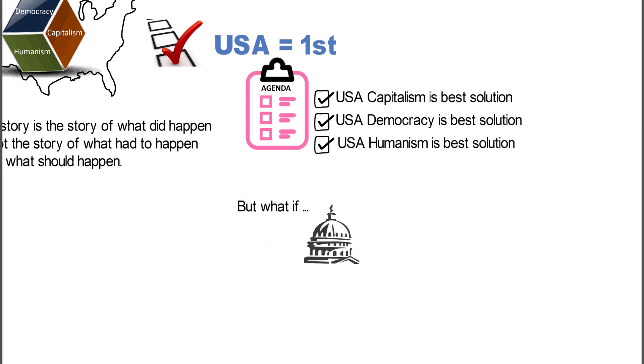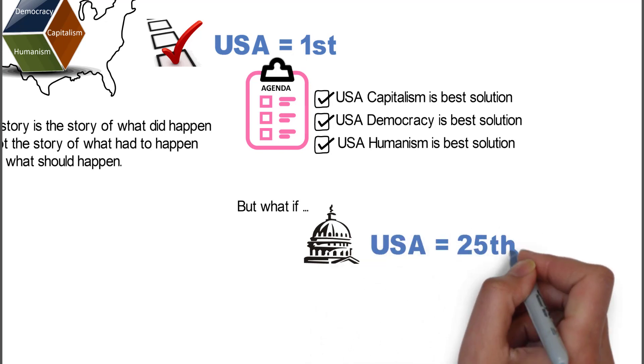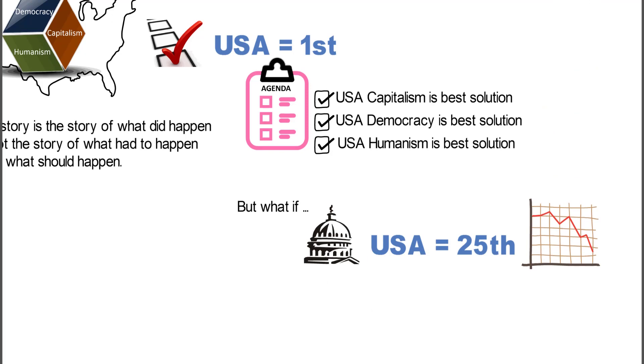but what if you looked at some of the objective evaluations of democracy? The USA democracy is 25th, and it's actually been going down in terms of not being the best solution.